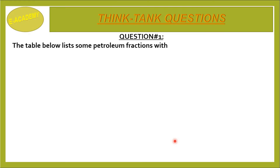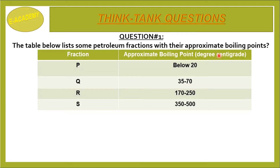Question No. 1: The table below lists some petroleum fractions with their approximate boiling points. The fractions are P, Q, R, and S. Fraction P is below 20°C, Q is 35 to 70 degrees Celsius, R is 172 to 250 degrees Celsius, and S is 350 to 500 degrees Celsius.